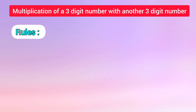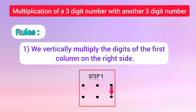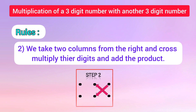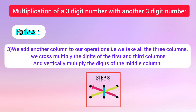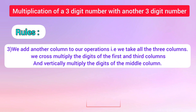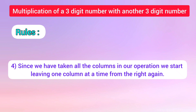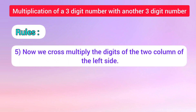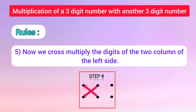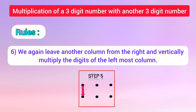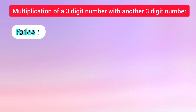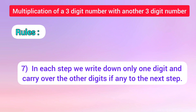Now we recall the rules used in the trick. First, vertically multiply the digits of the first column on the right-hand side. Second, take 2 columns from the right, cross-multiply the digits, and add the products. Third, add another column — take all 3 columns, cross-multiply the digits of the first and third columns, and vertically multiply the digits of the middle column. Since all columns have been included, start leaving one column at a time from the right. Fifth, cross-multiply the digits of the two columns on the left side. Sixth, leave another column from the right and vertically multiply the digits of the left-most column. The final and most important rule: write down only one digit and carry over any remaining digits to the next step.